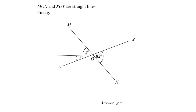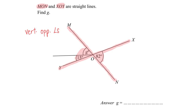Hello everyone, welcome to this part of the video where we are given that MON and XOY are straight lines. Find G. Since they are straight lines, this angle and this angle are the same because they are what we call vertically opposite angles. So to find the letter G, it is simply 82 minus 15.